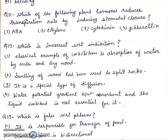Question 11: Which of the following plant hormones reduces transpiration rate by inducing stomatal closure? First, ABA. Second, ethylene. Third, cytokinin. Fourth, gibberellins. Right answer is first, ABA. Abscisic acid reduces the transpiration rate by inducing stomatal closure. It is also known as stress hormone.